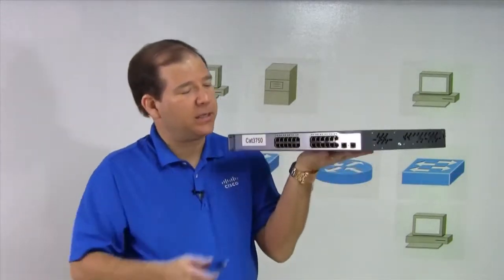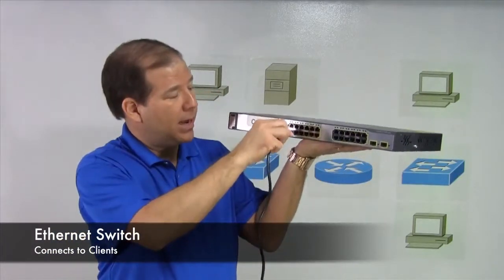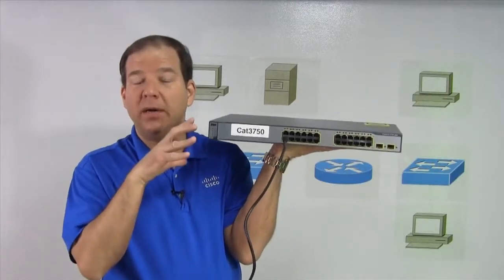In that centralized point, we have something like this, a Cisco Catalyst switch. We're going to connect that laptop or that client device into this Catalyst switch. That's how we get devices onto the network.